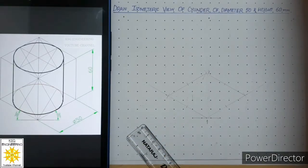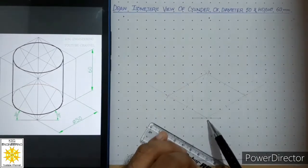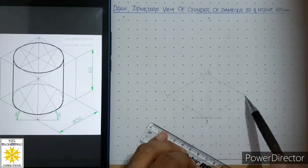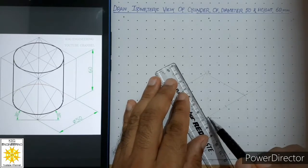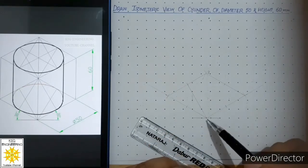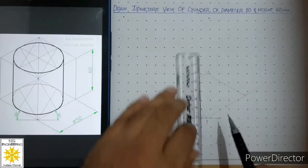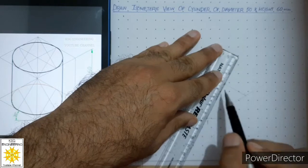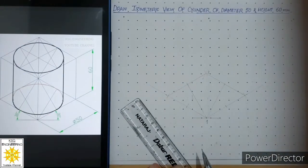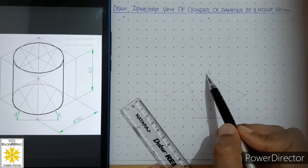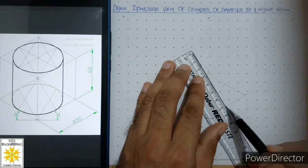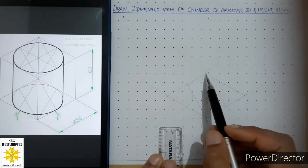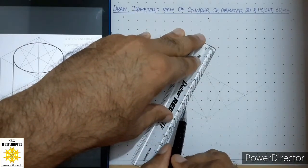After marking the midpoints, we apply the four-center method. From the first center draw a continuous thin line to the midpoint of the opposite side — these two sides are opposite sides. Then from the same center draw another thin line to the midpoint of the other opposite side. Repeat the same steps from the second center, drawing thin lines to the midpoints of its opposite sides.